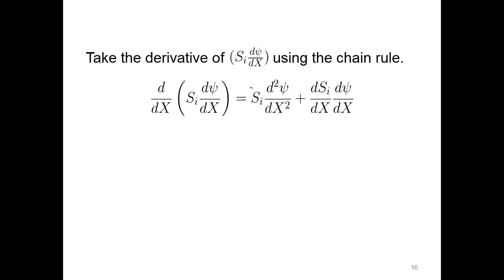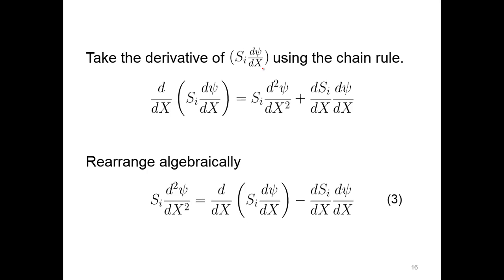If we take the derivative of the shape function times the derivative of psi with respect to x, and then using the chain rule, here's the derivative of shape function node i times the derivative of psi with respect to x. We get the second derivative times the shape function node i. So if we rearrange this algebraically, because we want to isolate this and then substitute for it, we're isolating this second-order derivative and getting the other terms by themselves.